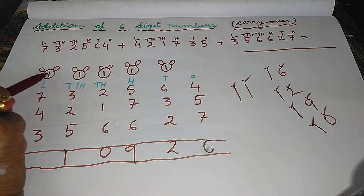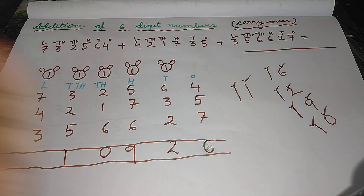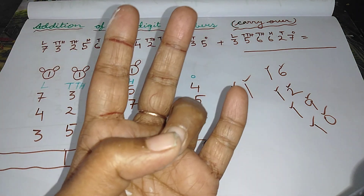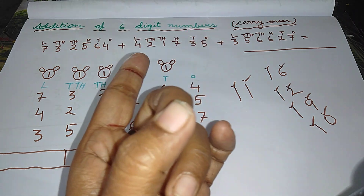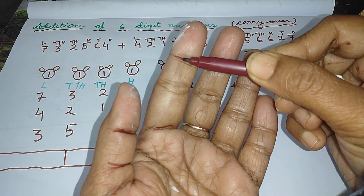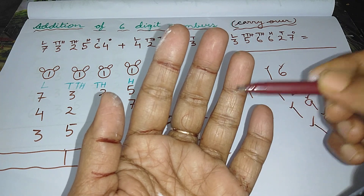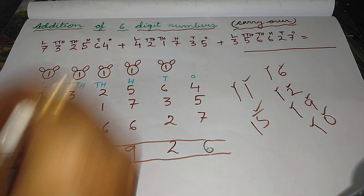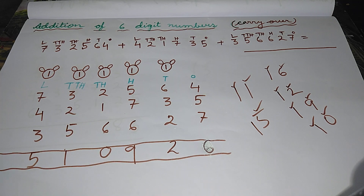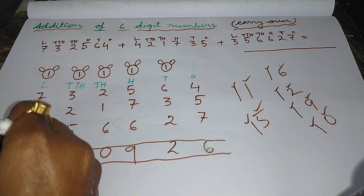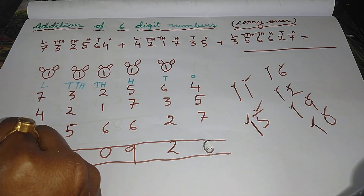Now add all these digits. The first digit is one, count one. The second is seven, count seven more. Then four, count four more. Then three, count three more — giving a total of fifteen lines. Write the last digit, that is five, in lakh's column. And where to write one? As there is no digit, write one directly over here.